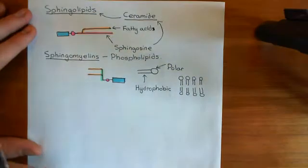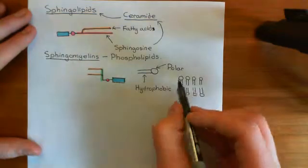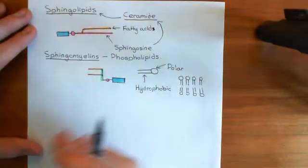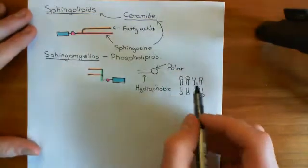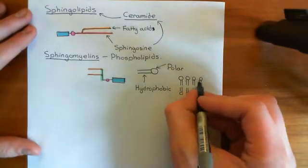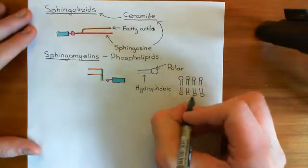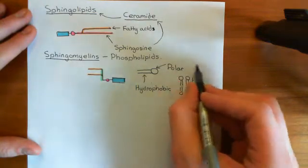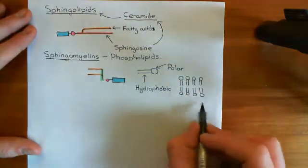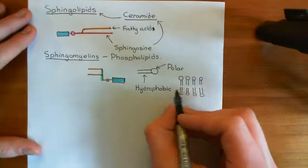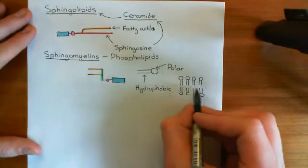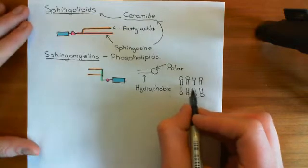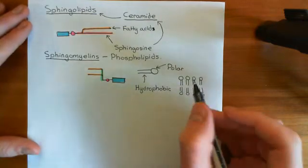We've got all the different sphingomyelins that you can dream up, and loads of different phosphoglycerolipids — all of them are considered phospholipids. The idea is that their polar heads face out towards the water, which is within the extracellular fluid and the cytoplasm, whilst the hydrophobic tails face inwards and interact with each other, nicely tucked away from the water molecules.